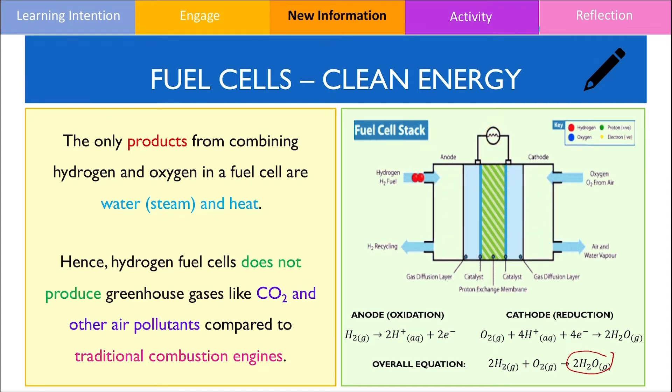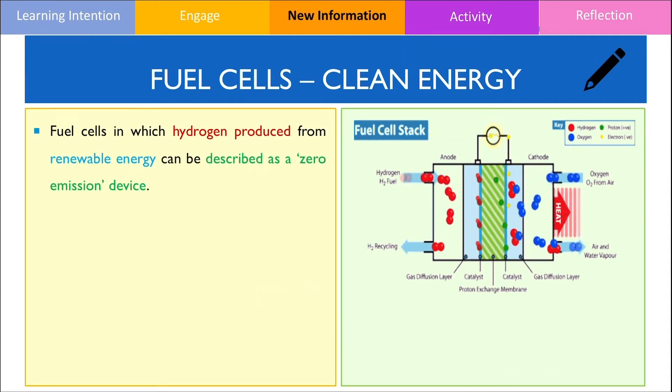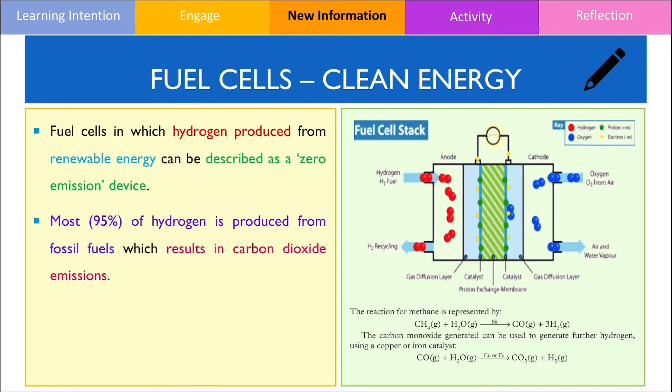If the hydrogen pumped into the fuel cell was derived from a renewable energy source, it can be regarded as a zero emission device. In reality, most of the hydrogen we use as fuel is derived from fossil fuels where it would have been refined in a process known as steam reforming which is summarised by the following chemical equations. This process ultimately results in the emissions of carbon dioxide, hence fuel cells cannot truly be labelled as a zero emission device.